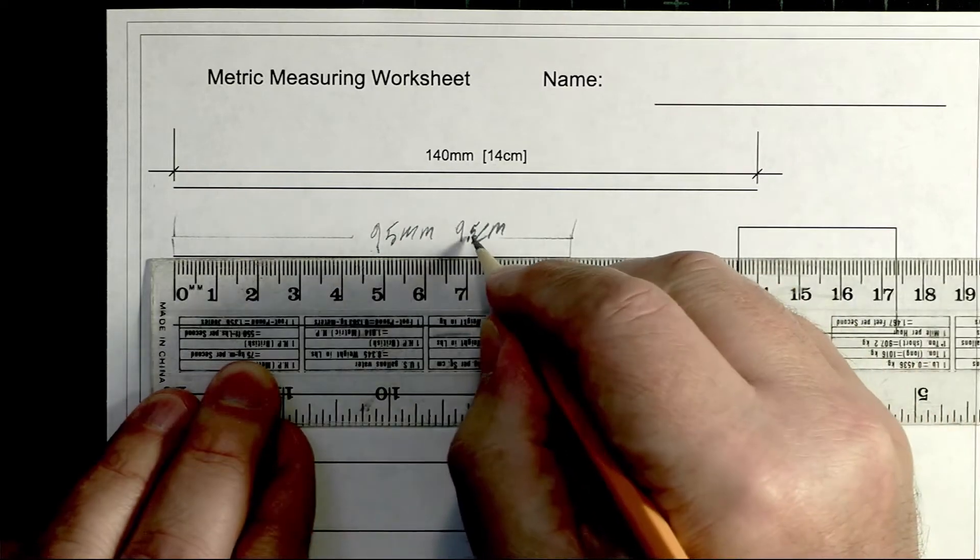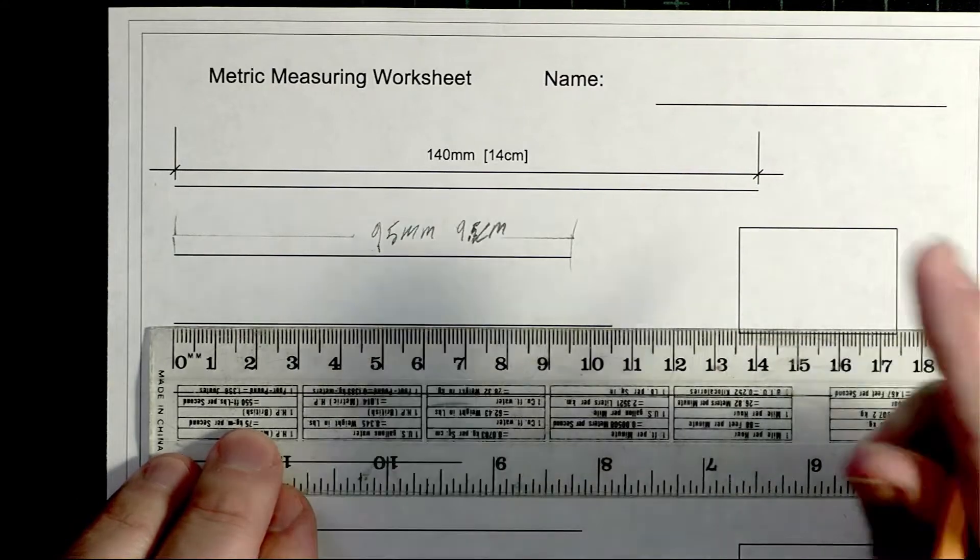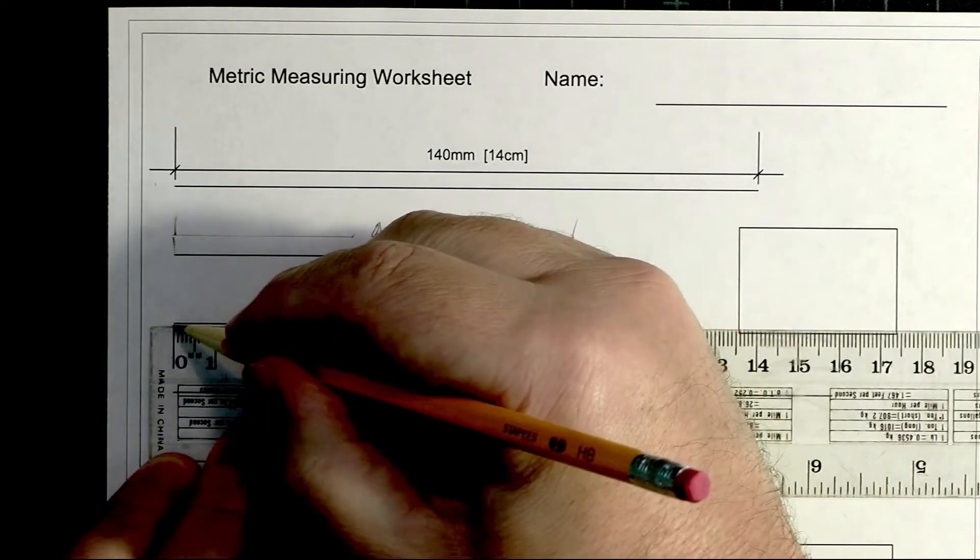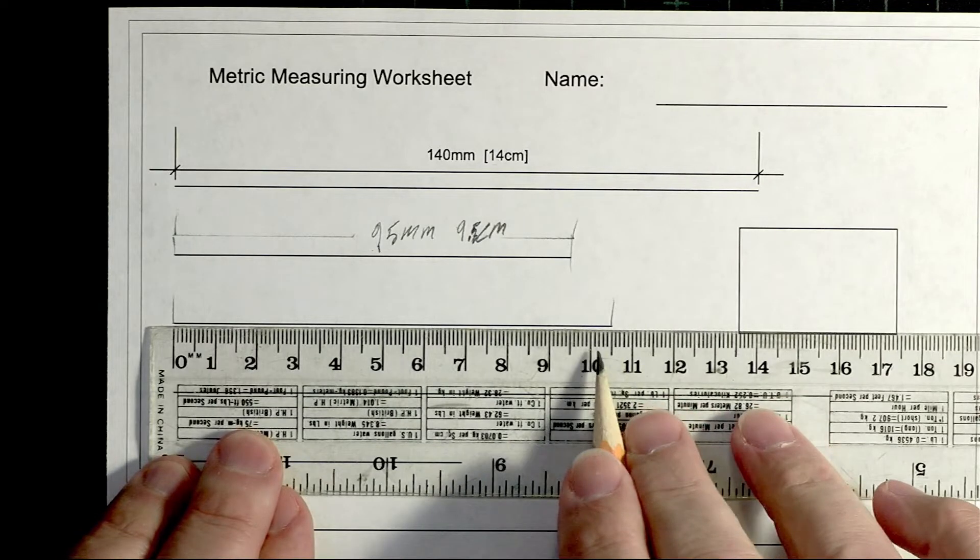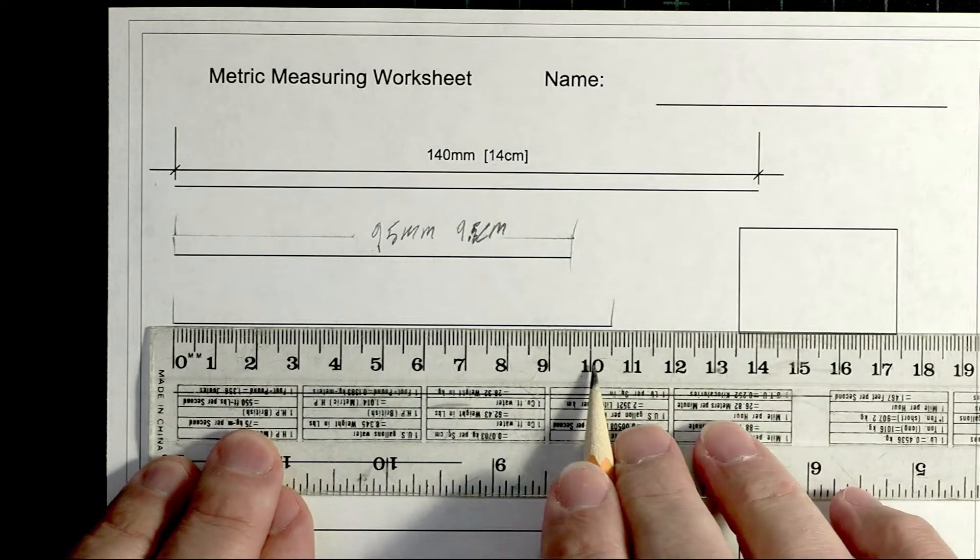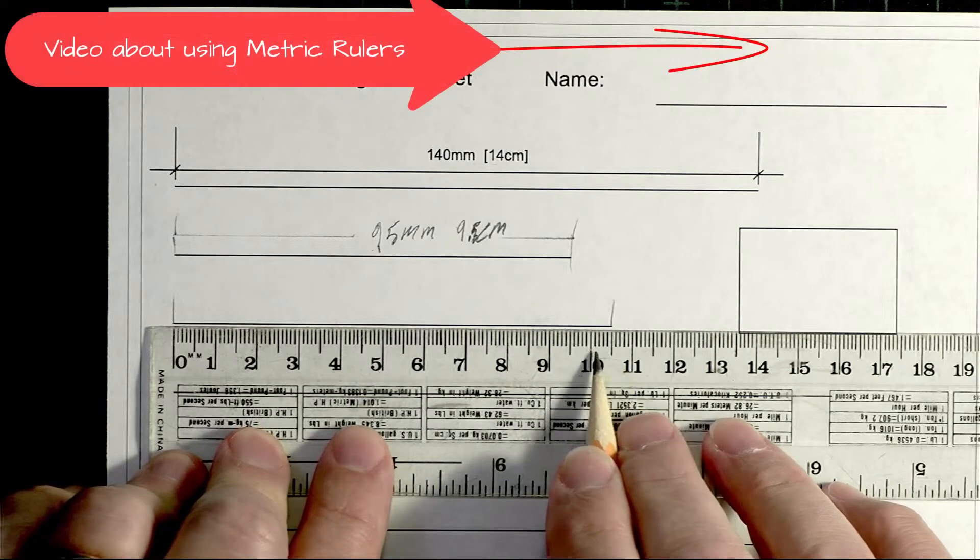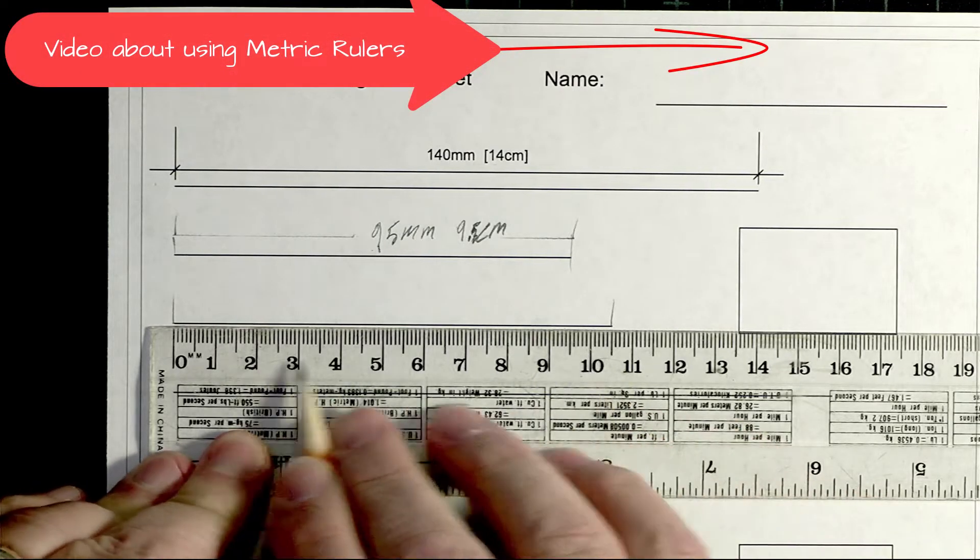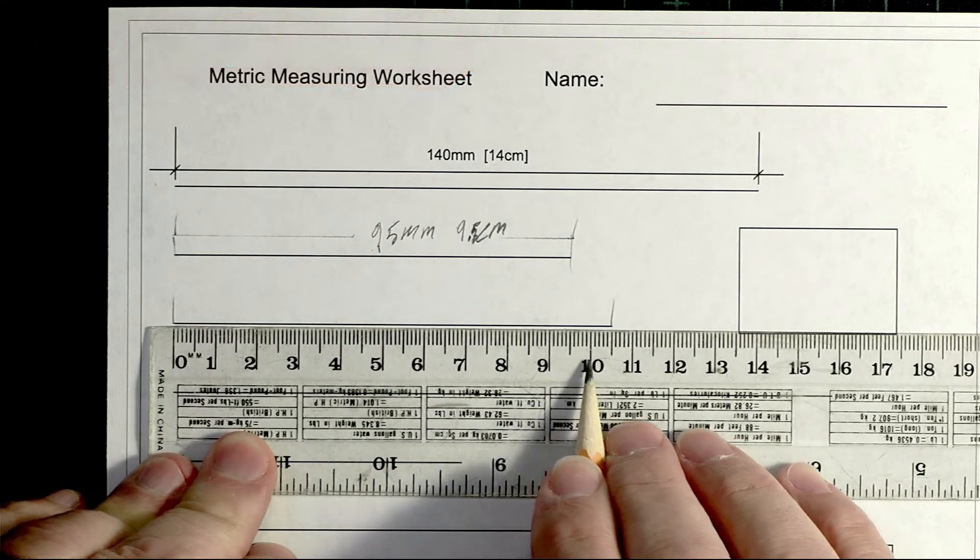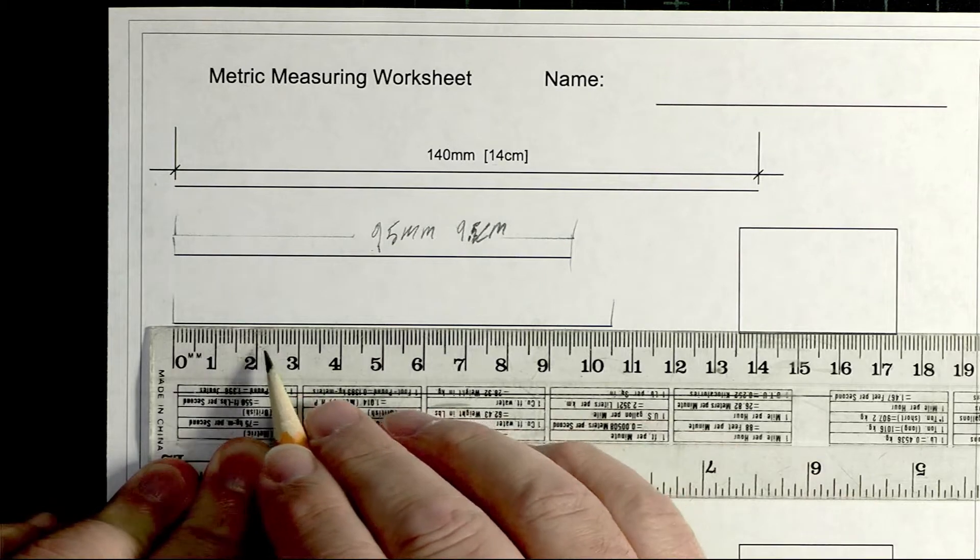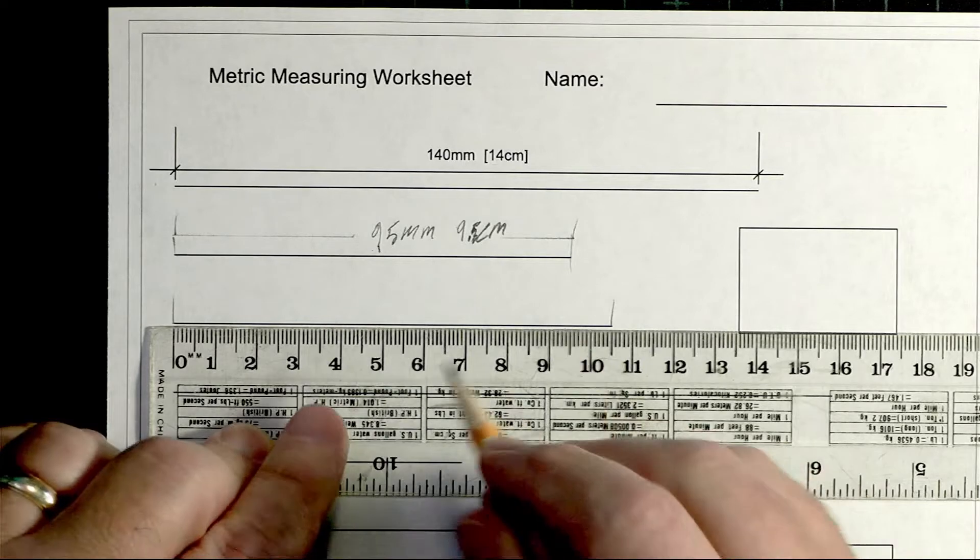Okay. The next line down: we have 10 and a half centimeters or 105 millimeters. Each one of these little lines is a millimeter, and in between each of these centimeters is 10 millimeters. So we have 10, 20, 30, and so on up to 100 millimeters plus five. So it's 105 millimeters.